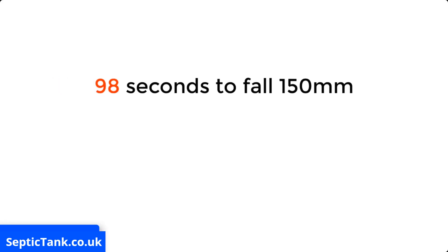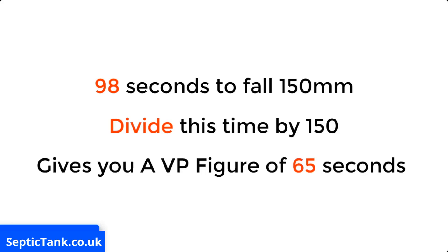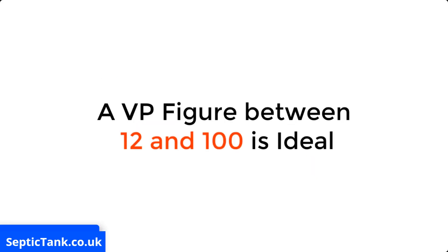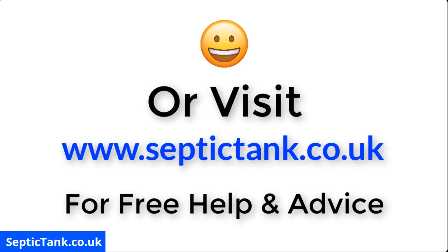For example, let's say it took 98 seconds for the water in the soakaway hole to fall 150 millimetres. You divide this time by 150 and that gives you a VP figure of 0.65 seconds, which is ideal because a VP figure between 12 and 100 is acceptable. For more information, just click the link below this video or visit septictank.co.uk for free help and advice.